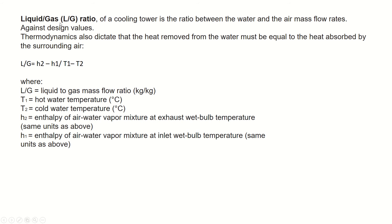The liquid-to-gas ratio, also called L/G ratio, is the ratio between water and air mass flow rates. It equals (H2 minus H1) divided by (T1 minus T2), where T1 is hot water temperature, T2 is cold water temperature, H2 is the enthalpy of the air-water vapor mixture at exhaust wet bulb temperature, and H1 is the enthalpy of the air-water vapor mixture at inlet wet bulb temperature.